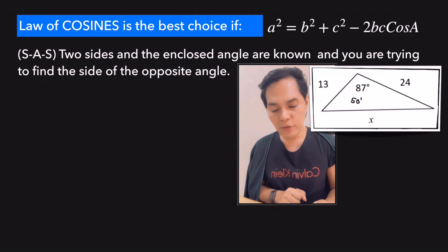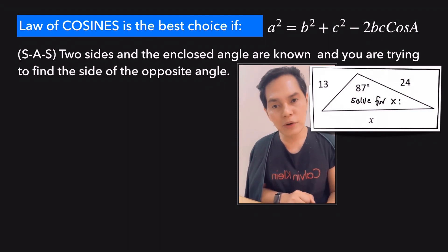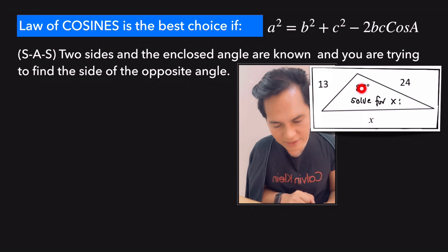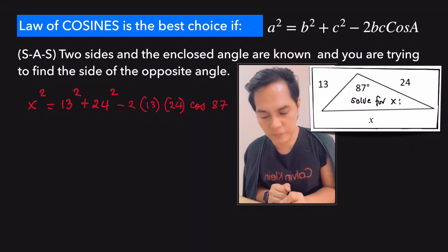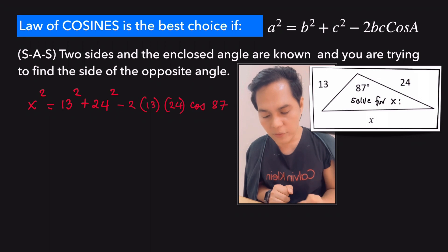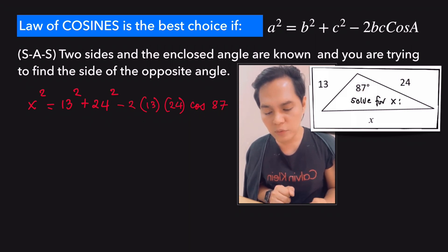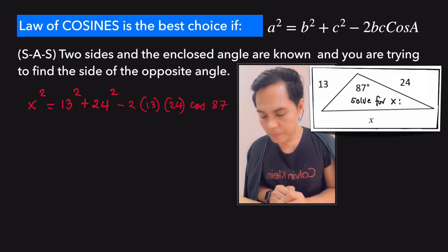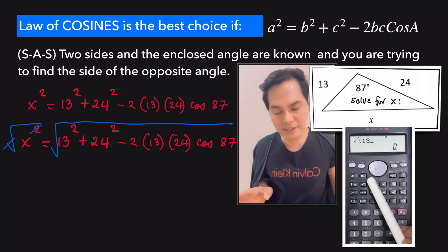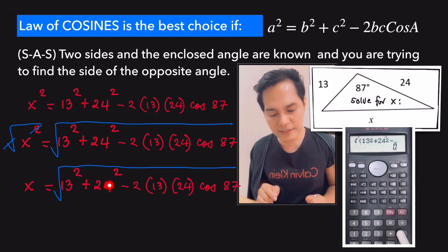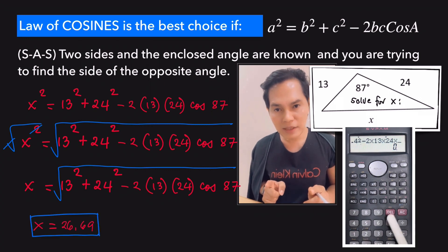To solve for x in the SAS example, look at the formula and substitute the given values. Since x is the side opposite to 87°, the equation is: x² equals 13² plus 24² minus 2 times 13 times 24 times cosine 87°. Solve algebraically by taking the square root of both sides. Entering everything into the calculator, the value of x is equal to 26.9. Check the calculator steps for how this is entered.